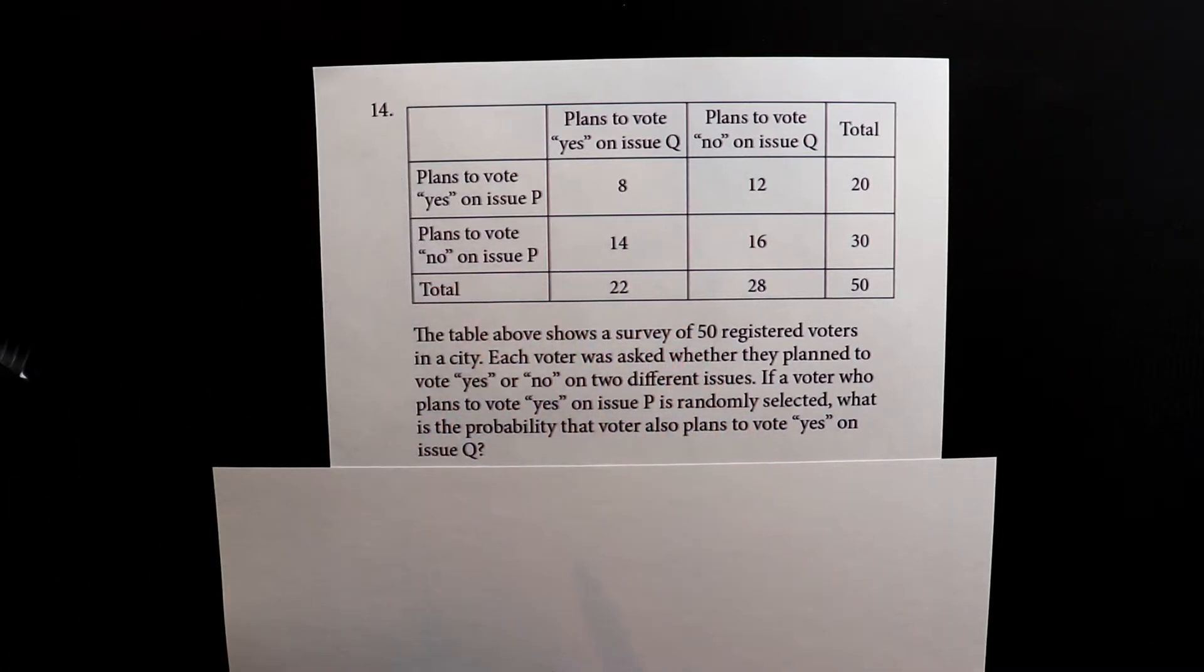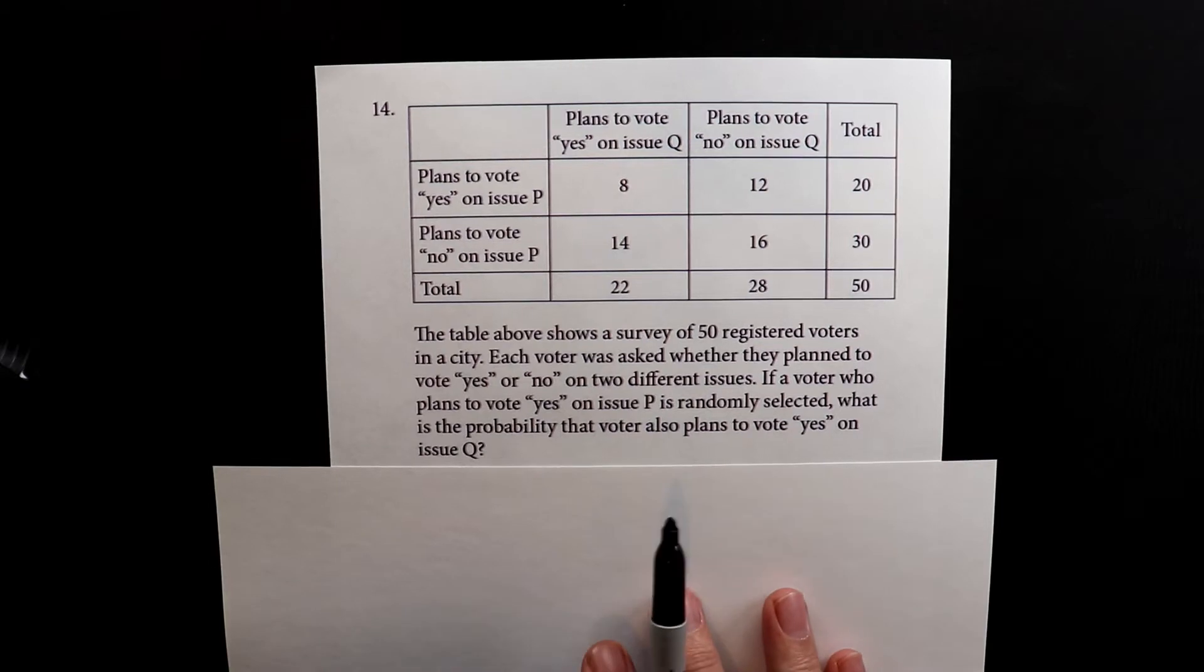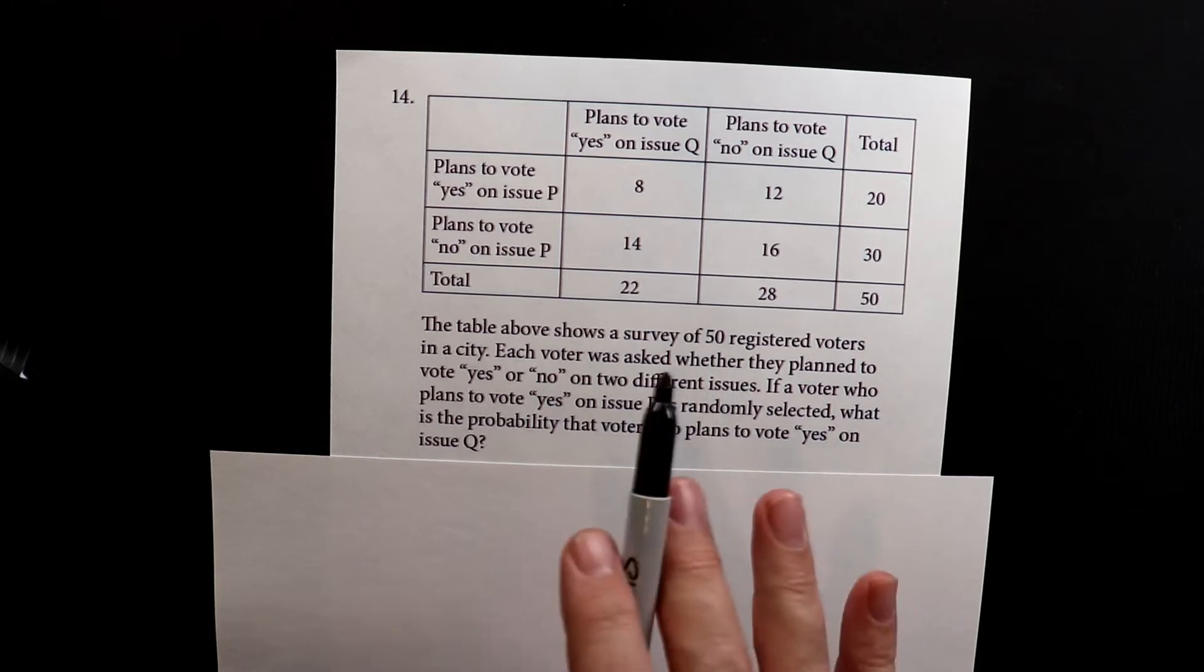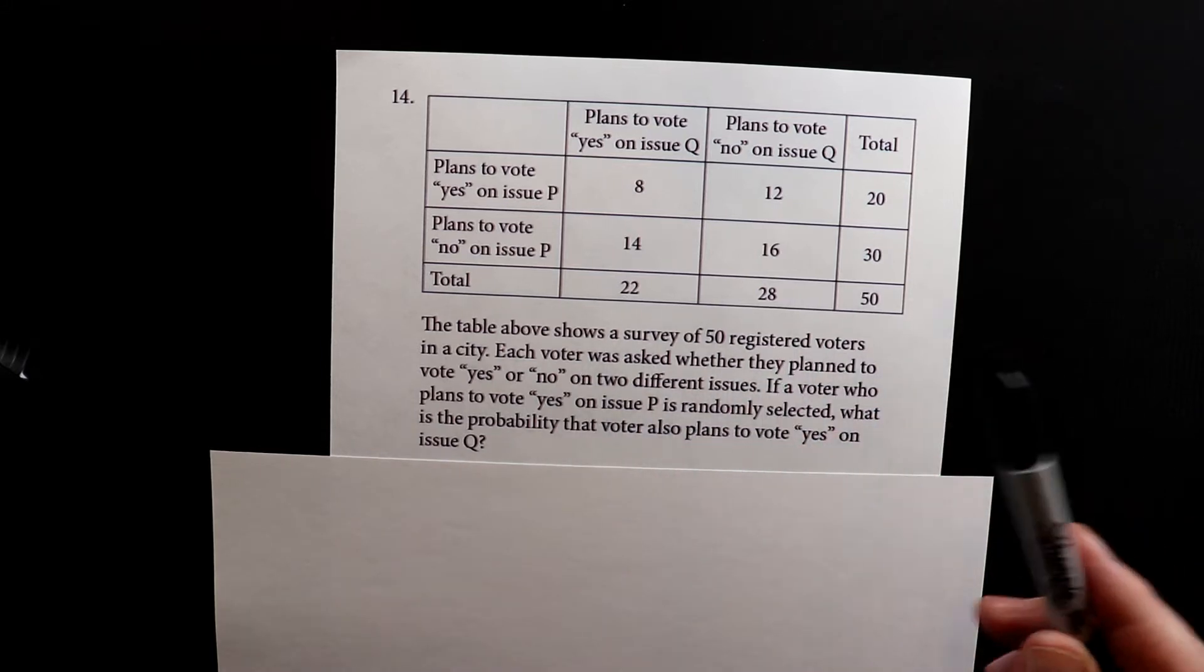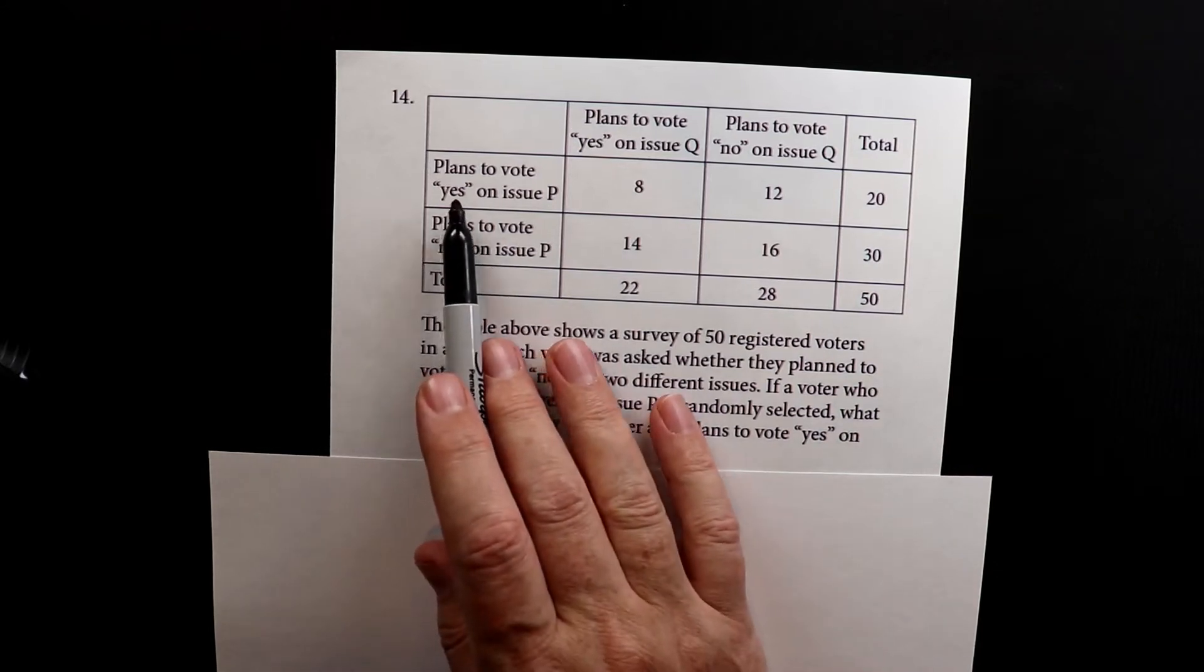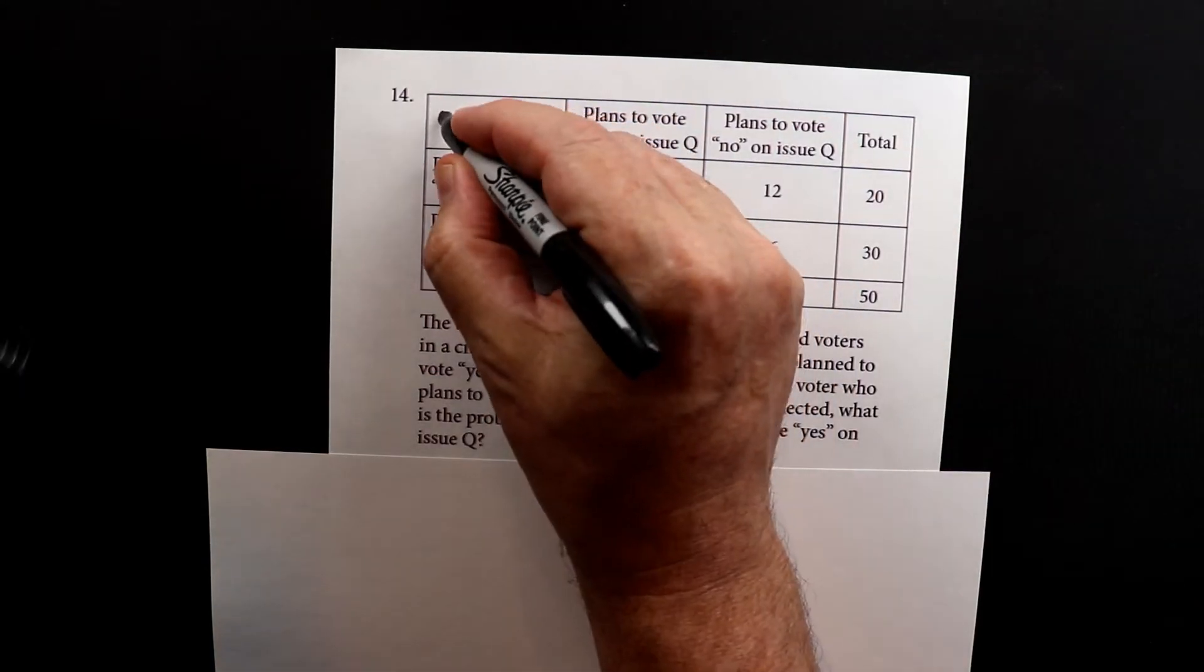This is number 14 of test 2 of the Accuplacer, and here we have a table. So before we go into it, let's decipher this table. What they do on the left-hand column, they have people who, we're talking about people here.